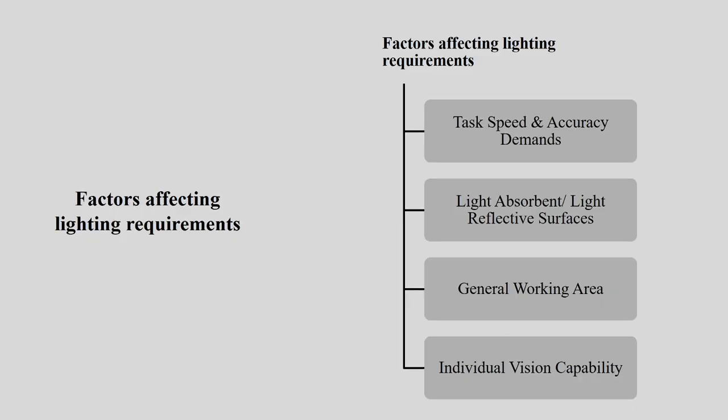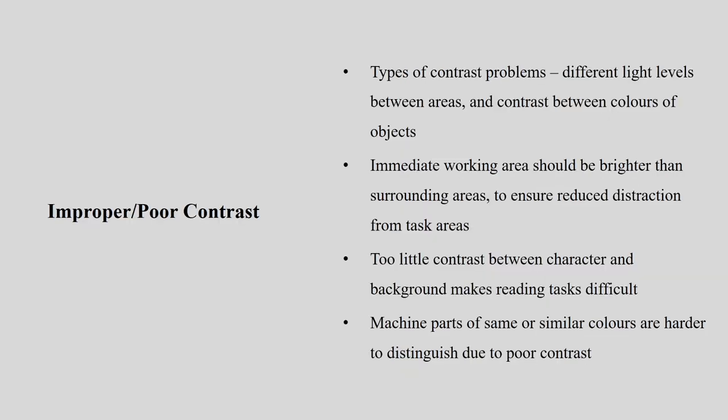When talking about light, we should understand what factors affect lighting requirements. Task speed changes with different illumination levels, and accuracy of demand, light absorption by the surface, the general working area, and individual vision capability are all important. You can control most of these parameters. When talking about illumination and the visual environment, it is very important to understand correct and improper contrast.